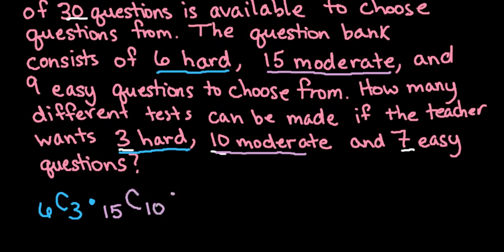And then our last one that we have is that we have nine easy questions in the test bank and we want seven easy questions on our test. So for this one instead of just finding 30 things taken 20 at a time we have specific situations that must be met. So we have to have three hard questions, 10 moderate questions, and seven easy questions. So we have to break it down like this.